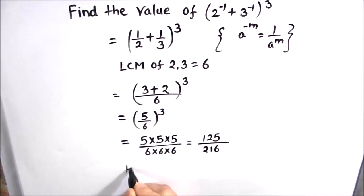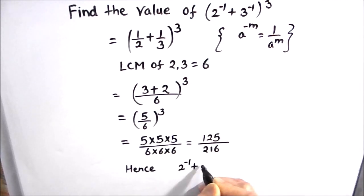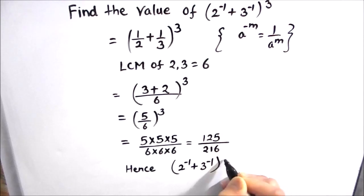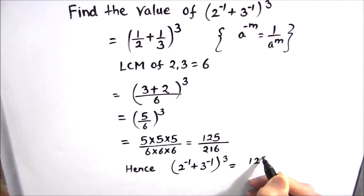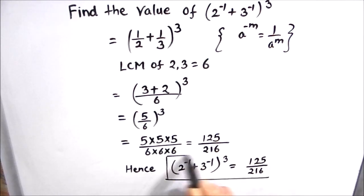Hence, the value of 2 raised to power minus 1 plus 3 raised to power minus 1, whole cube, is equal to 125 divided by 216. So this is how we find the value of these types of expressions.